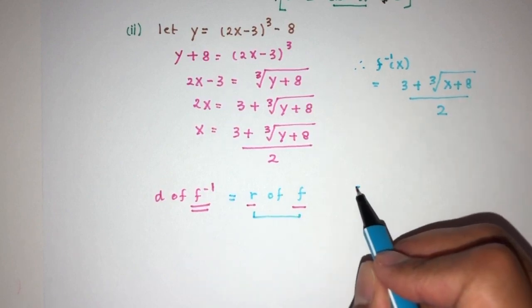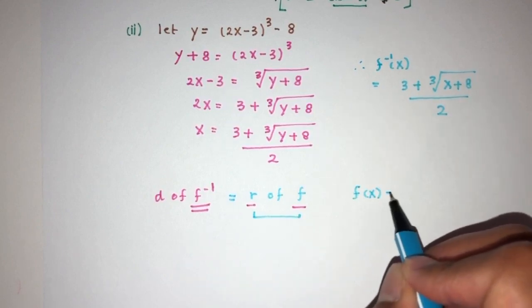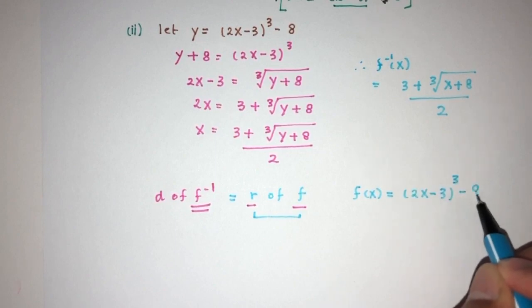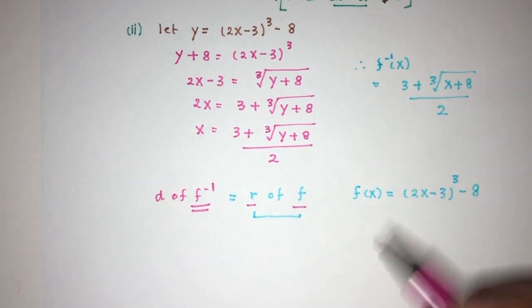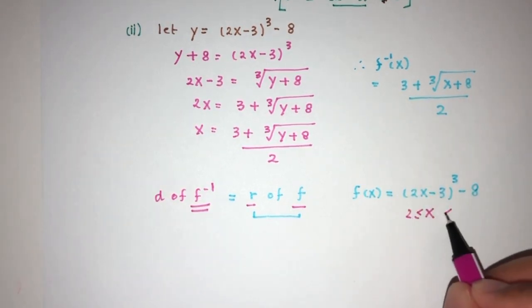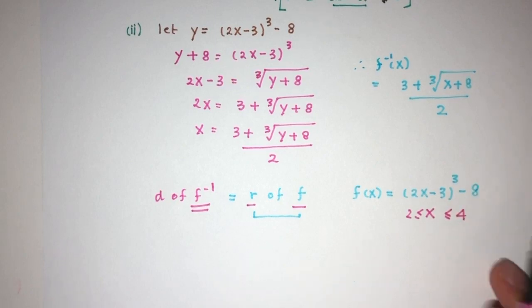So, f(x) is given to you by (2x - 3)^3 - 8. For values of x between the values of 2 and the values of 4. Now, since it is an increasing function, we can first find the minimum value and the maximum value.